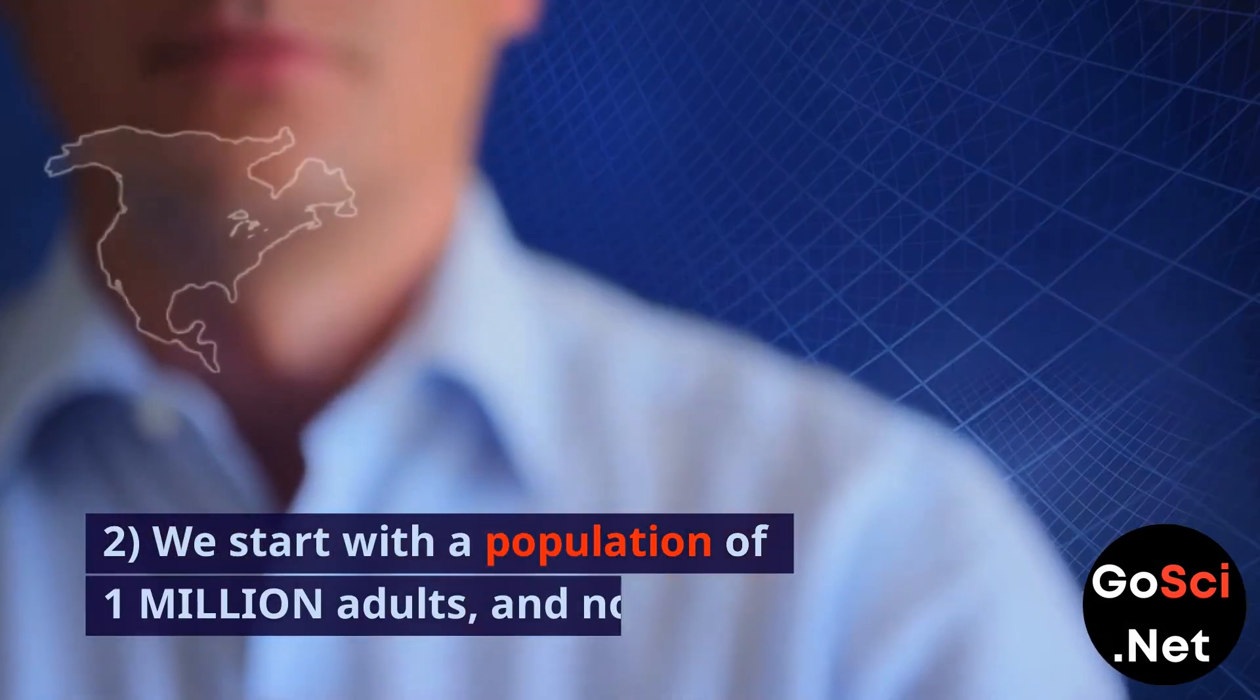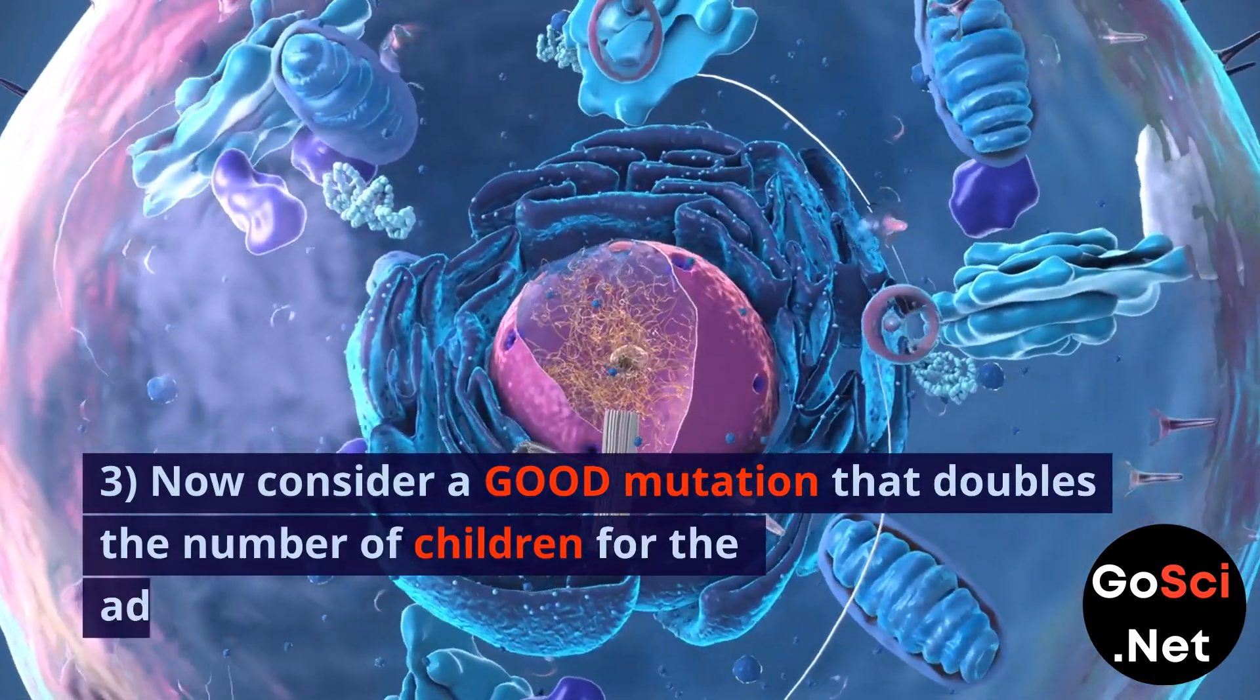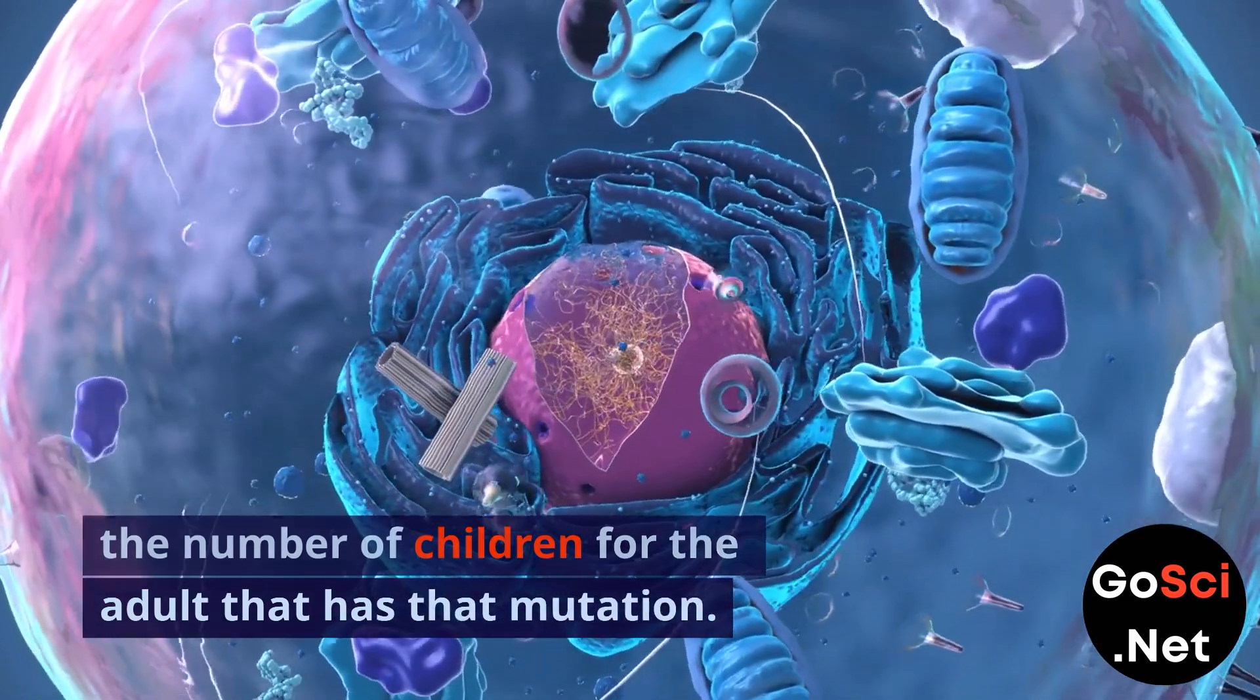We start with a population of 1 million adults and no children. Now consider a good mutation that doubles the number of children for the adult that has that mutation.